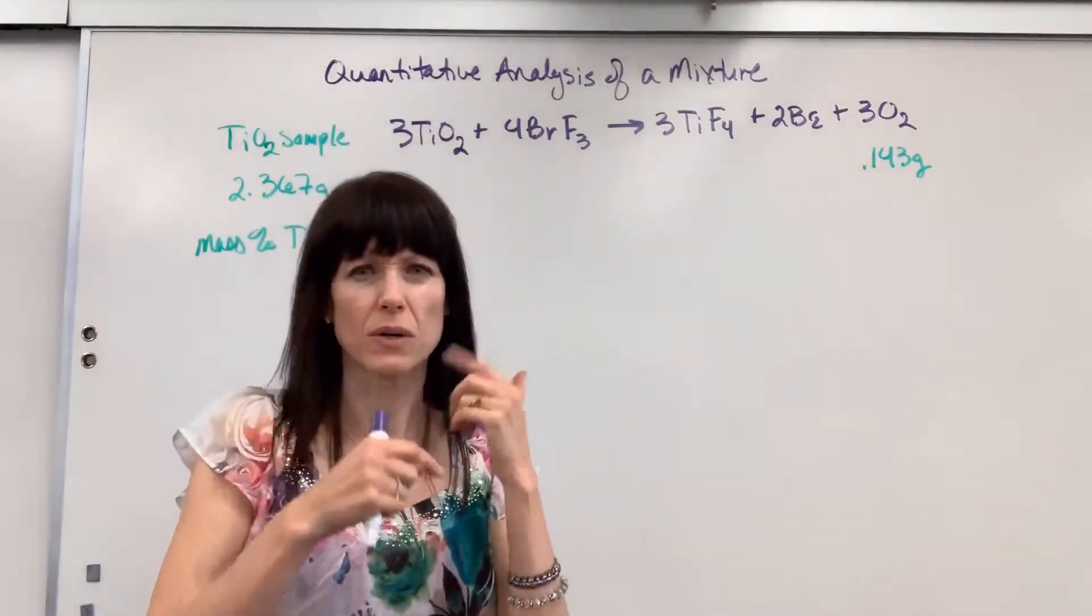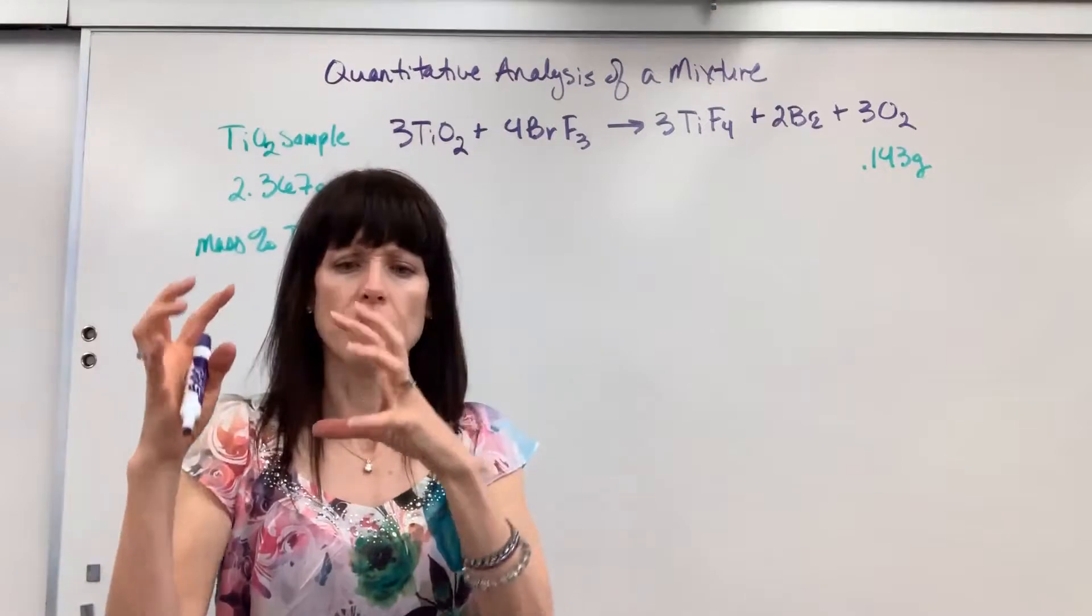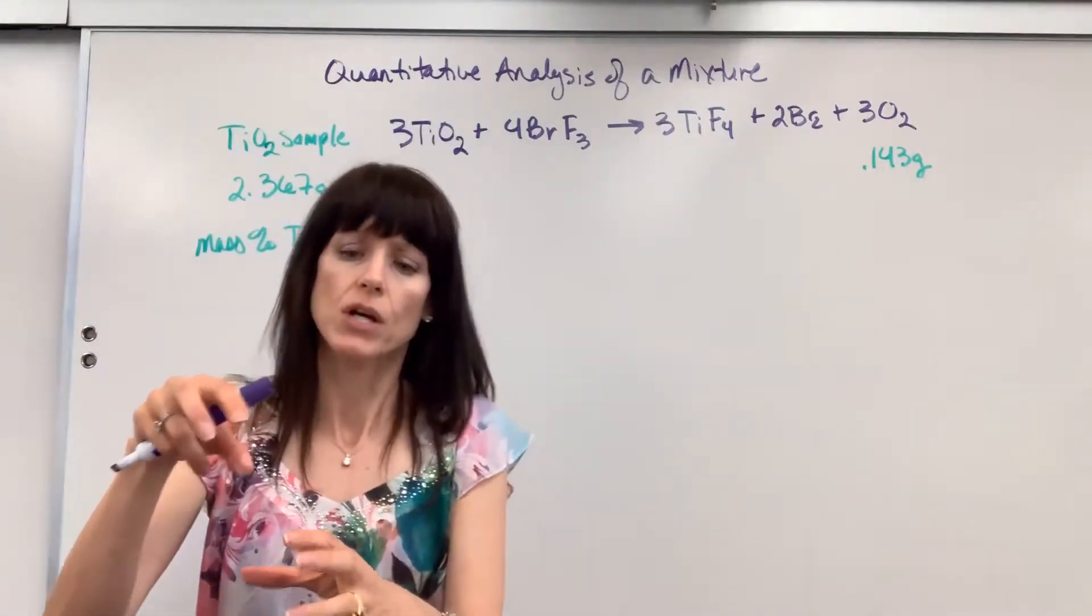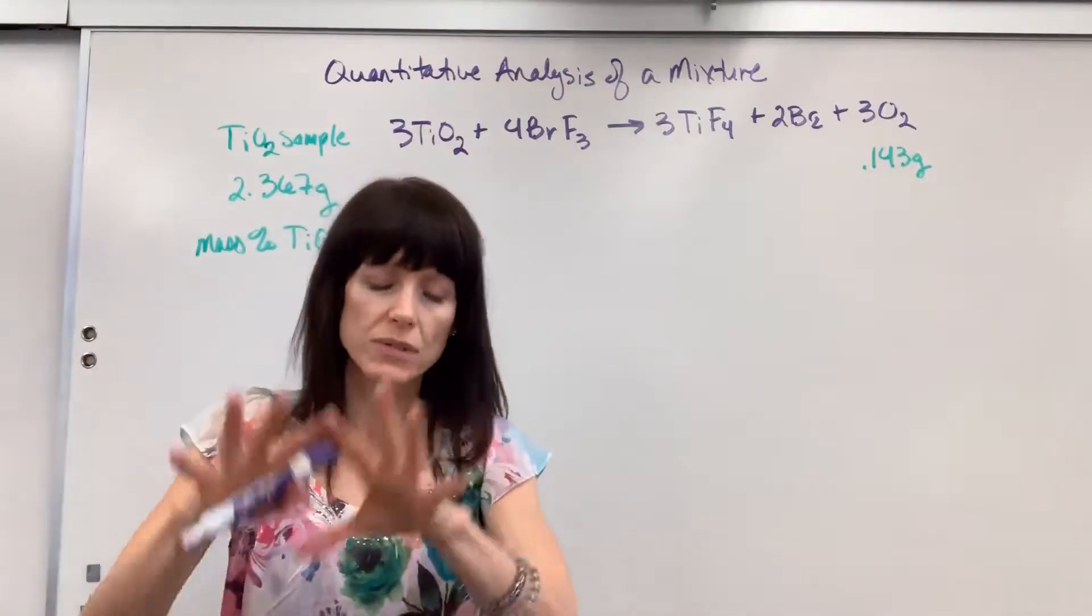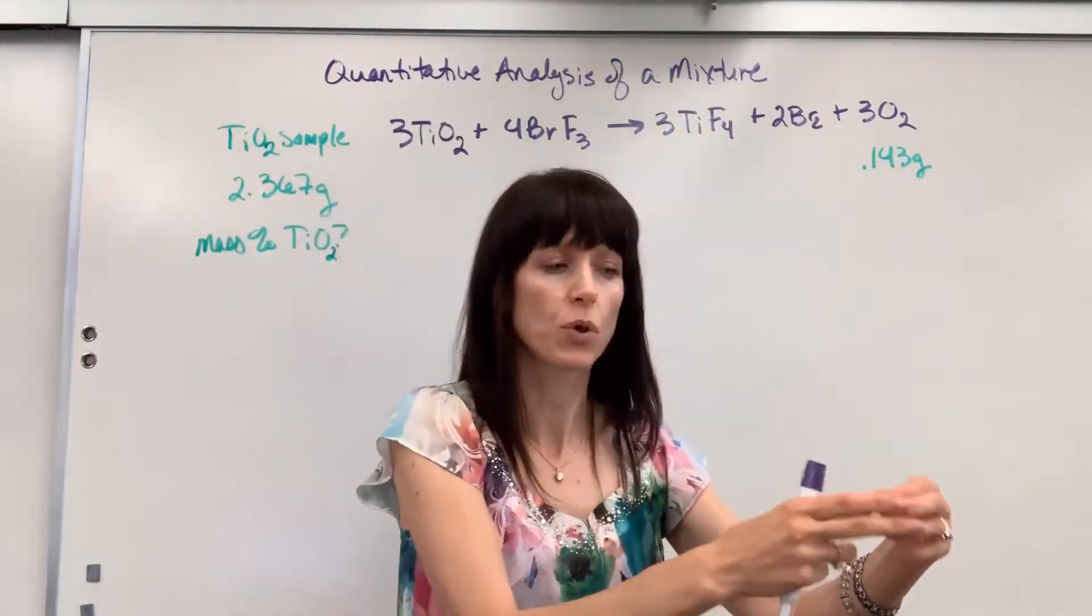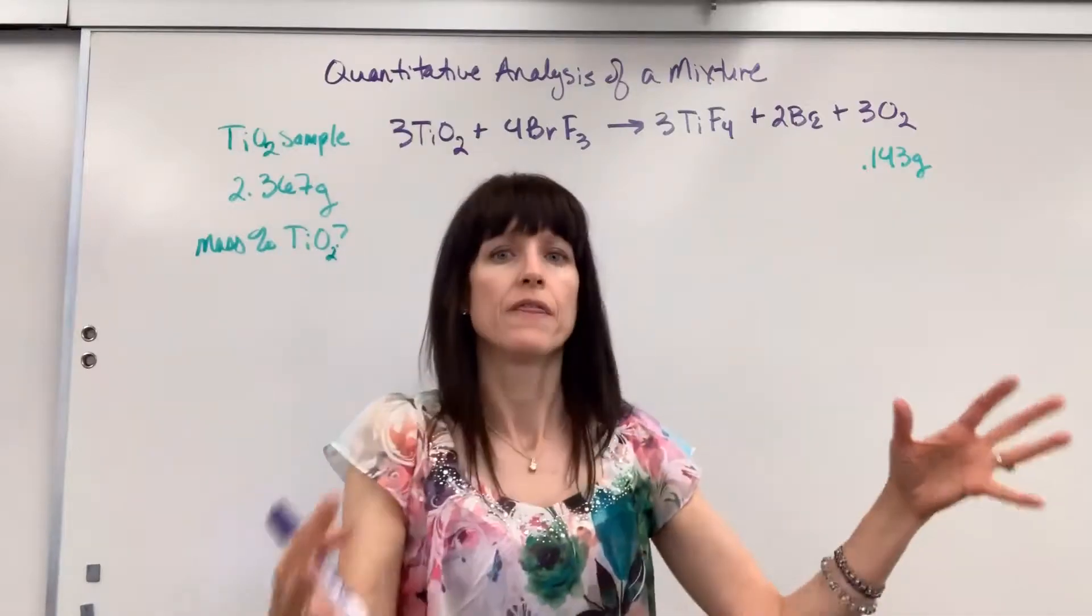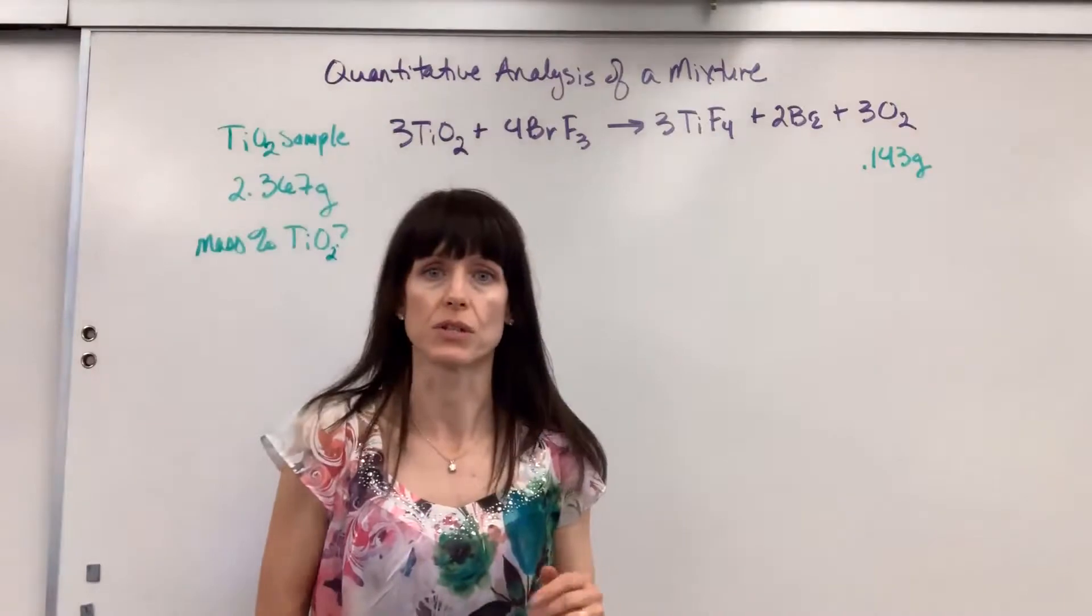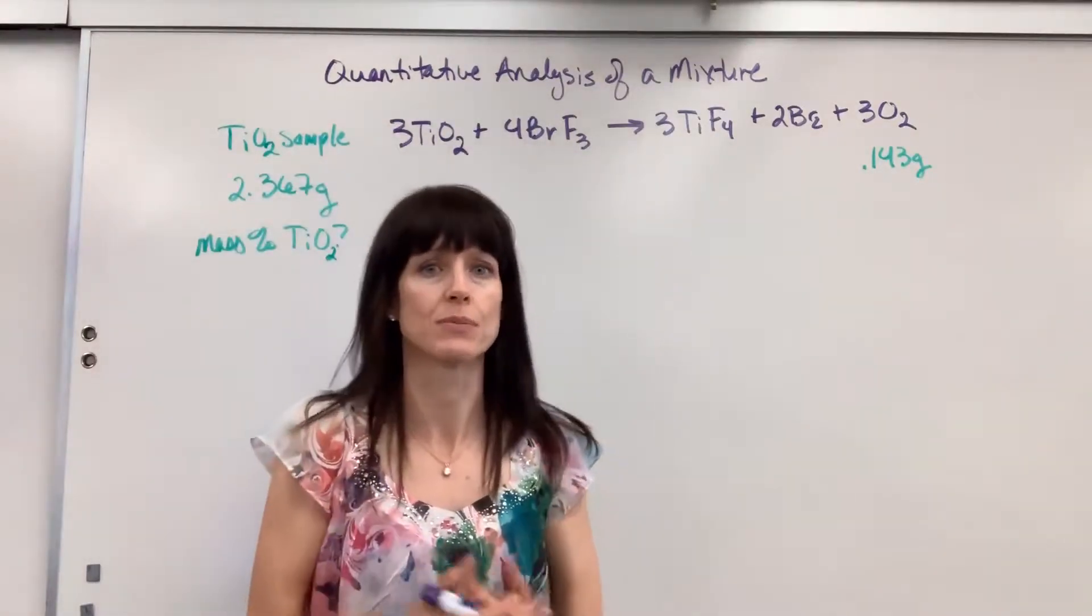So we can isolate exactly ultimately how much oxygen there was that came from just that titanium four oxide. So that's the thought process that you're going through of a mixture. You're trying to identify the amount of one compound. So you pour, you do some reaction that just that compound will react with and you're able to quantify the products. That's how you do quantitative analysis of a mixture. That's the principle, the lab principle behind it.